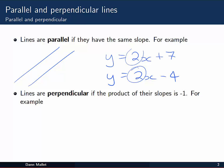On the other hand, lines are said to be perpendicular if the product of their slopes is minus 1. So something like y equals 2x plus 7, and y equals minus 1 half x plus 7. These lines would be perpendicular because the product of 2 and minus 1 half is minus 1.